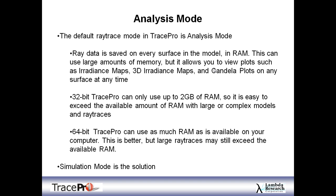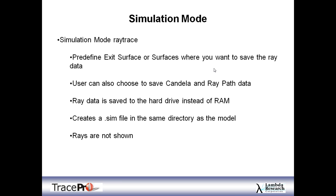A 32-bit version of TracePro is limited by Windows to using only 2 GB of RAM, so it's easy to exceed that with a large or complex model or a ray trace with a large number of rays. Switching to a 64-bit operating system and a 64-bit version of TracePro lets you use as much RAM as you have on your computer. 64-bit versions can use up to about 198 GB depending on your version of Windows. The solution, if you're starting to run out of RAM, is to switch to simulation mode.